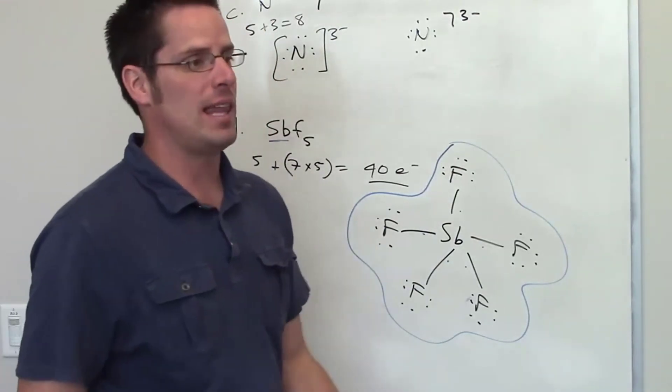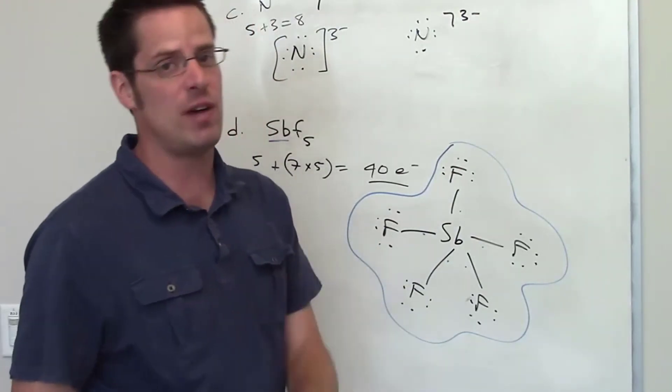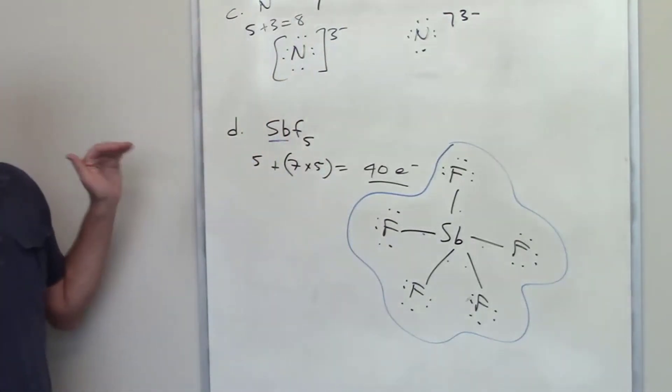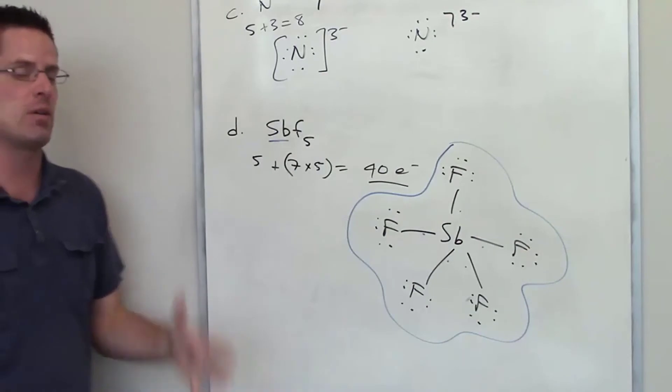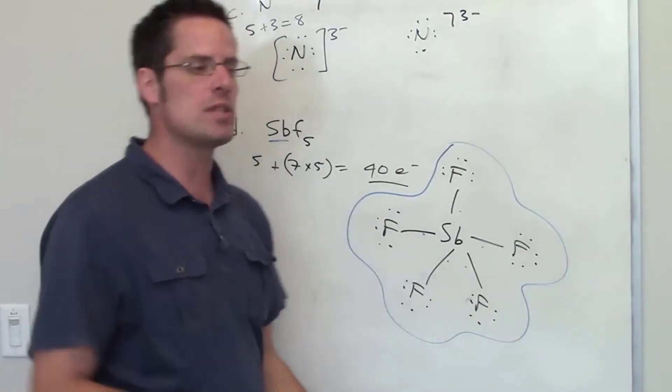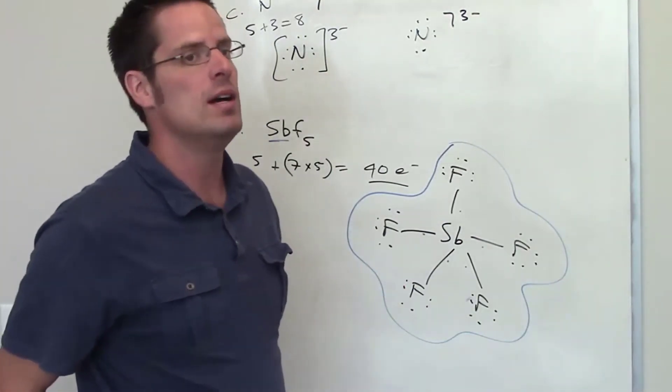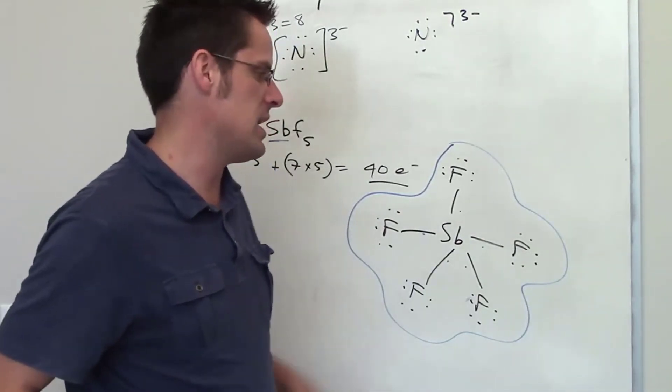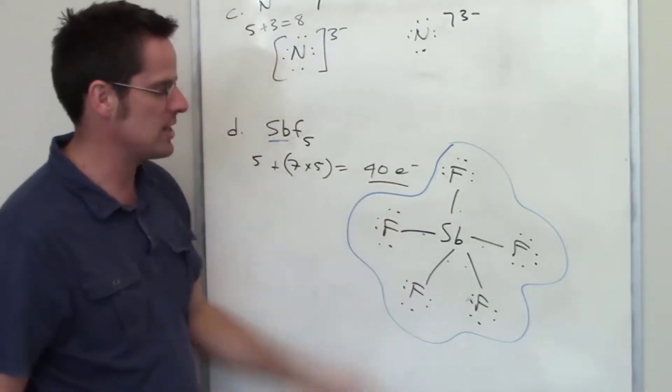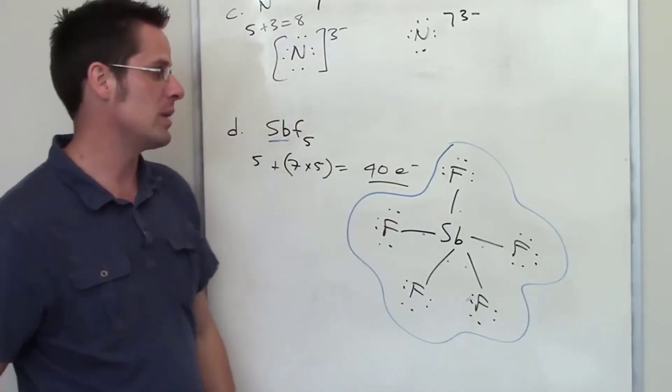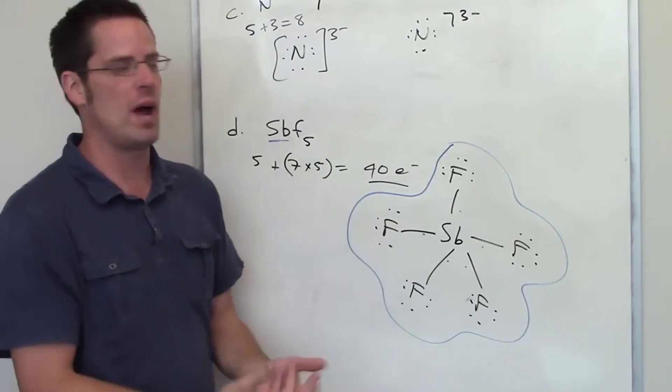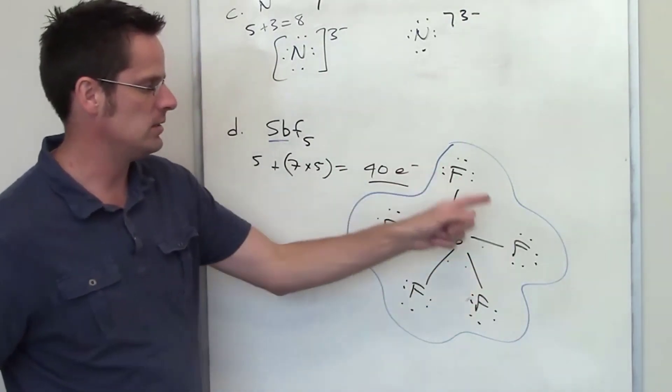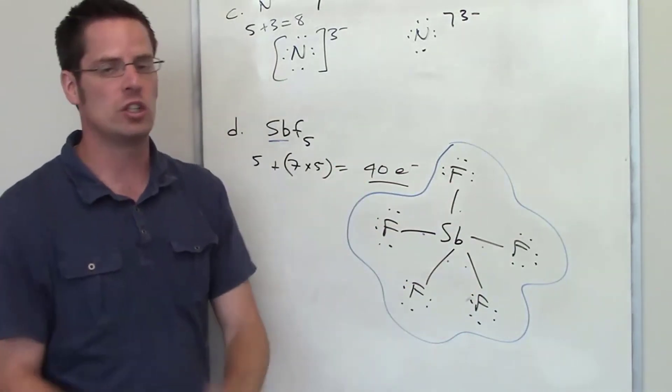Now, generally speaking, we don't like to violate octet rules. However, you can violate octet rules when there is no other choice, particularly for elements that are in row 3 or below of the periodic table. The reason is because those elements have higher orbitals that have the ability to contain more electrons than just your 8 electrons that you normally see with the lower rows. So this is a case where antimony, the central atom, does violate the octet rule, and the reason is because there is no other way you can get all 40 electrons into that system without violating the octet rule on the peripheral fluorines, which you're not going to want to do.